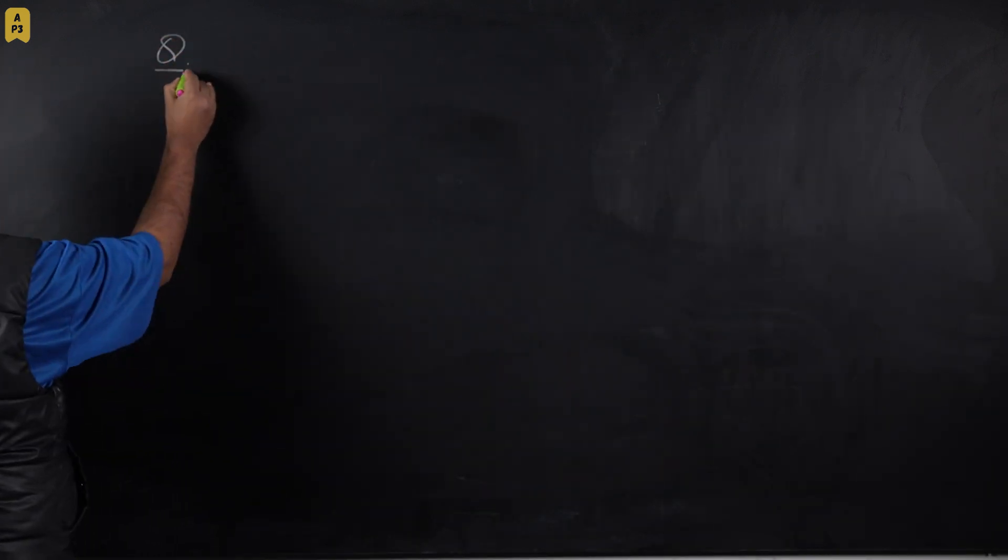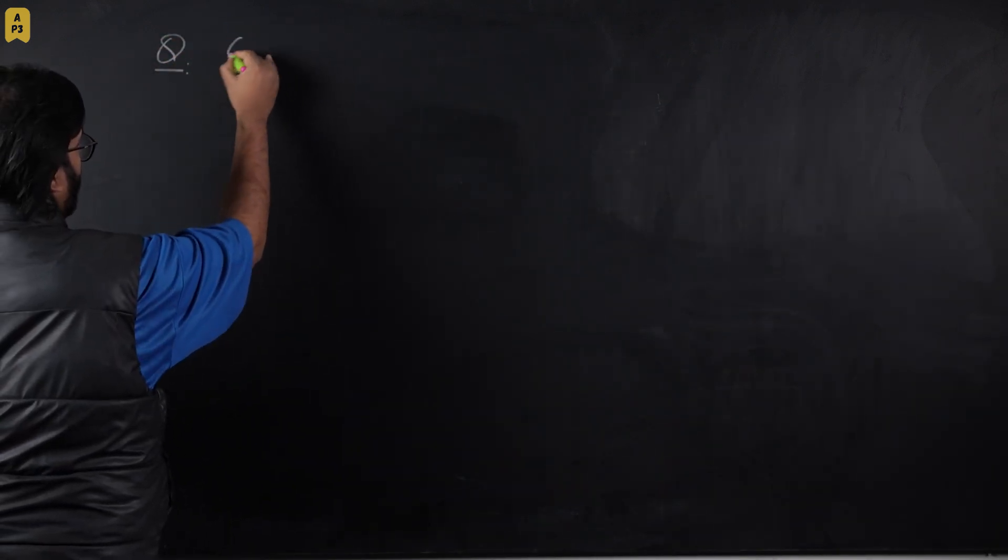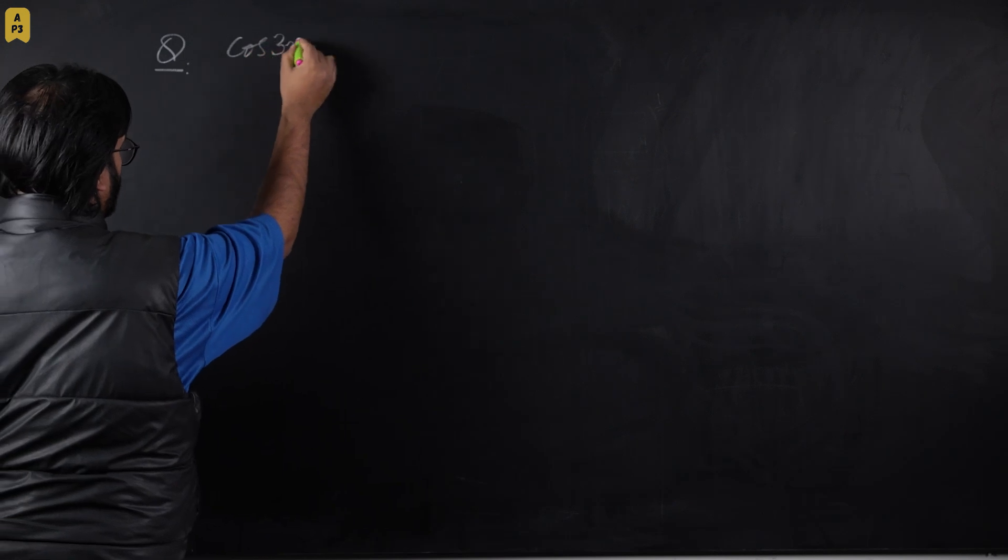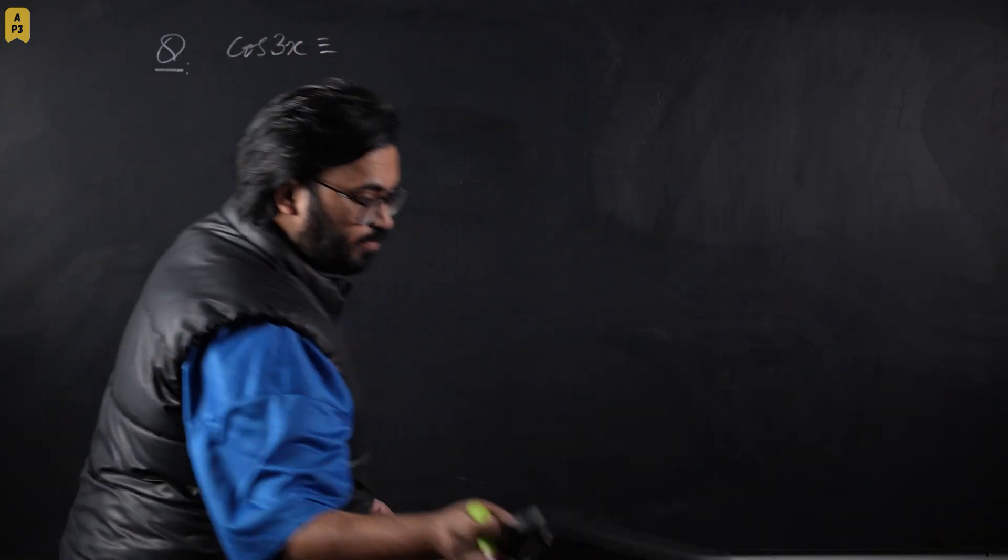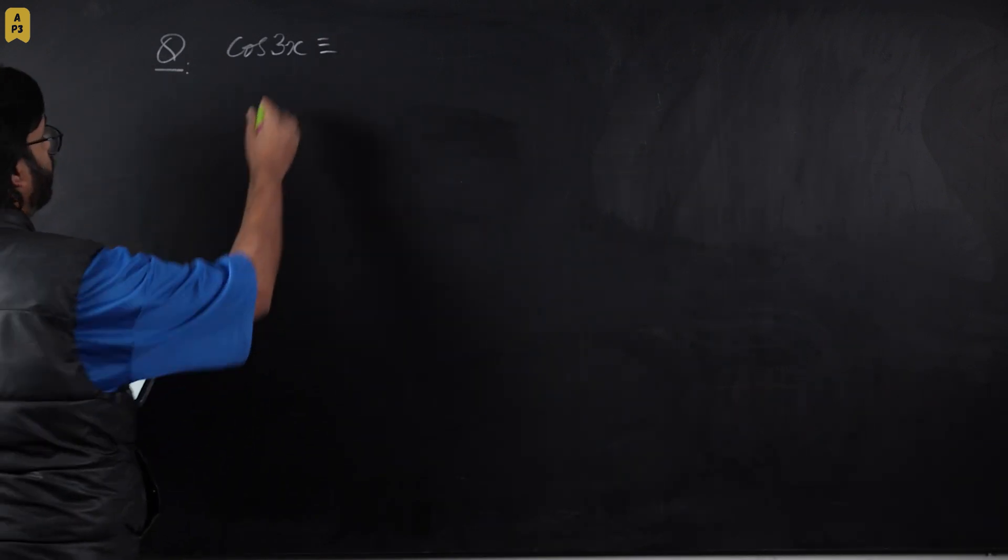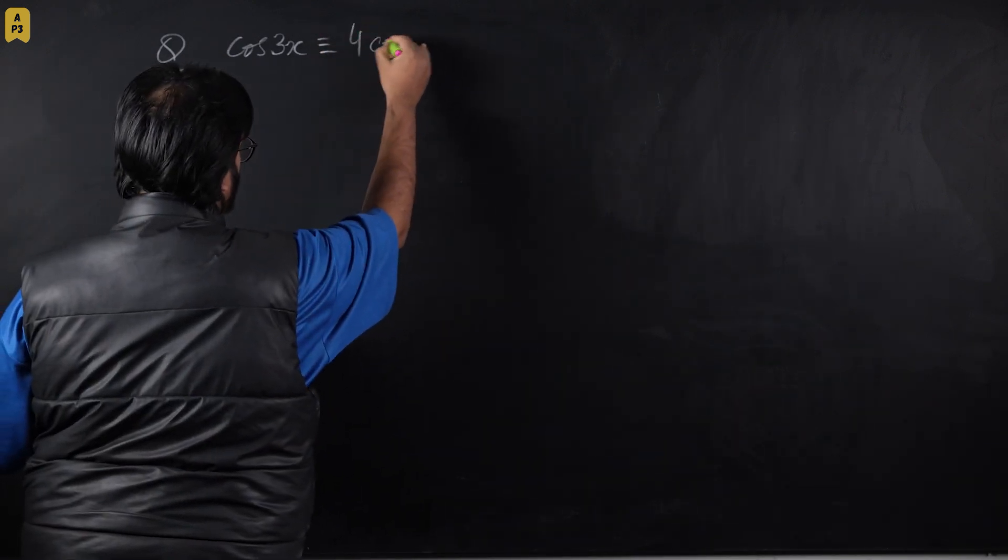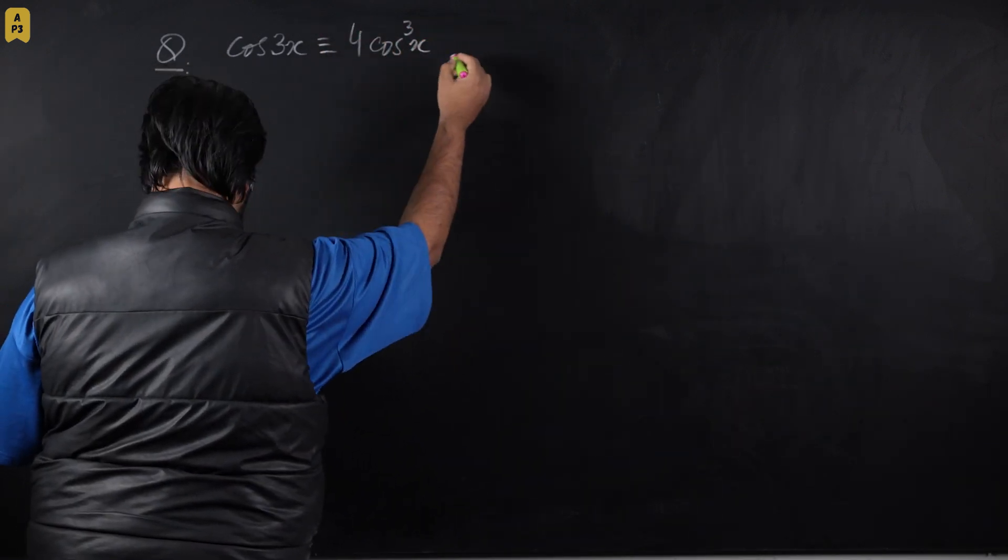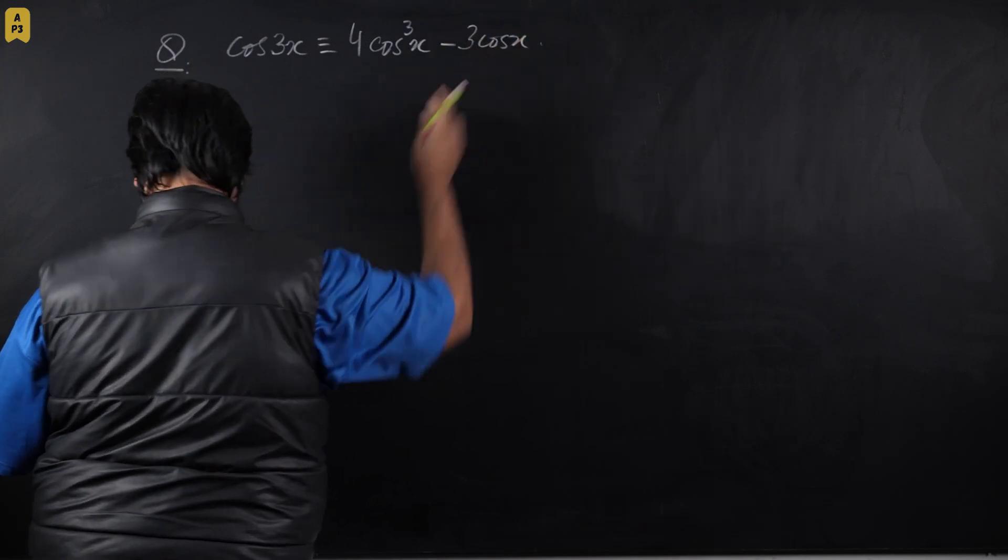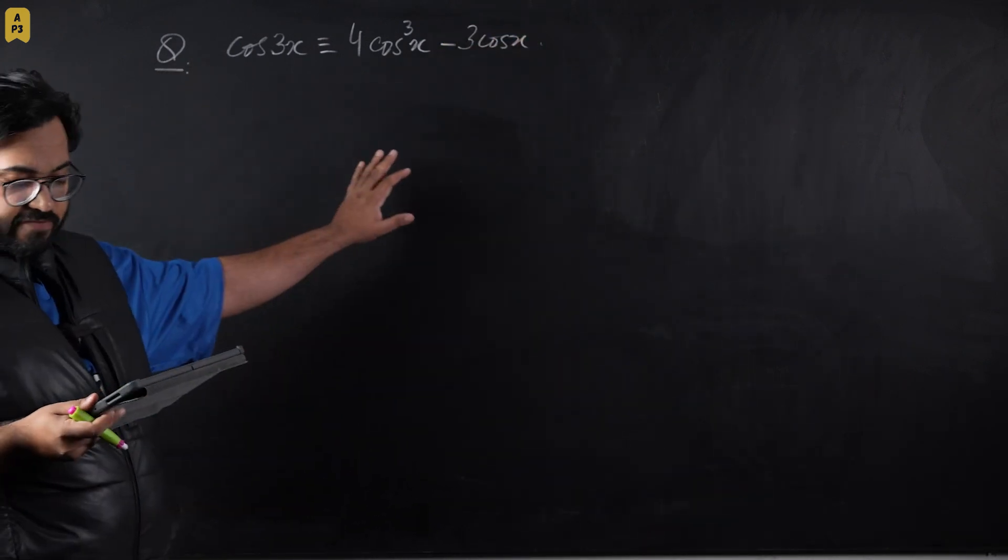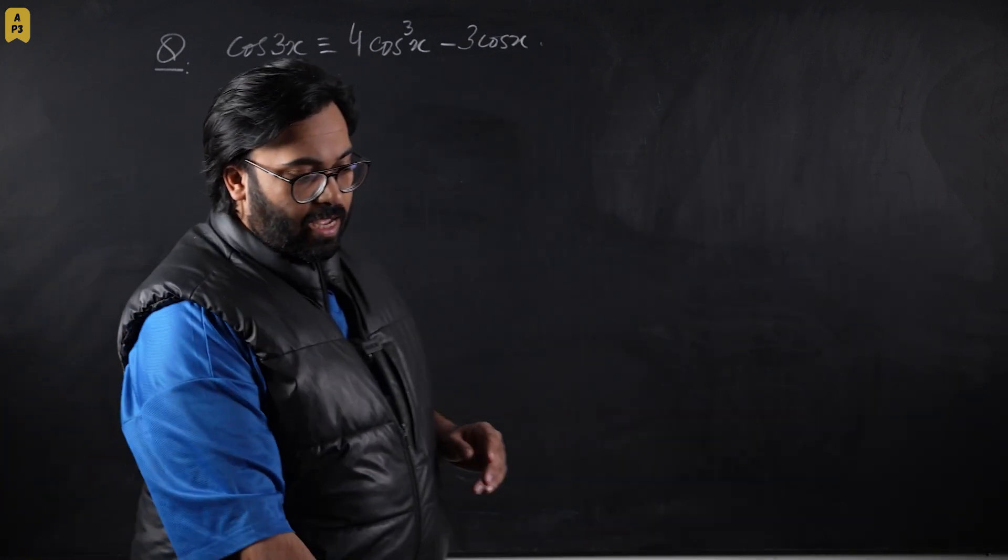Let's look at the question first. We need to expand cos 3x and show that this is equivalent to 4cos³x - 3cos x. This is not a very difficult idea to prove, but you must know the tactic behind it.